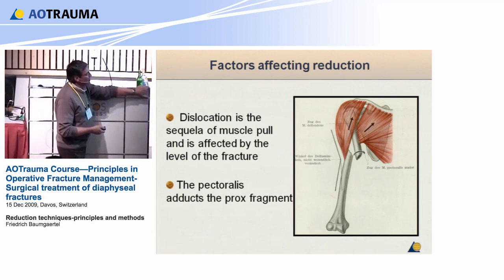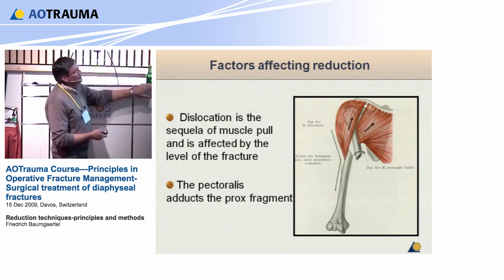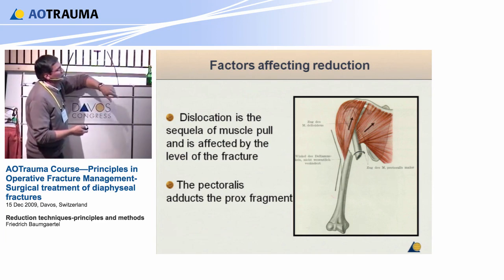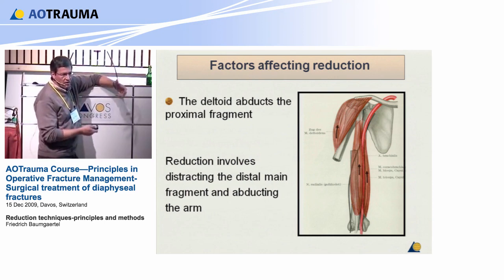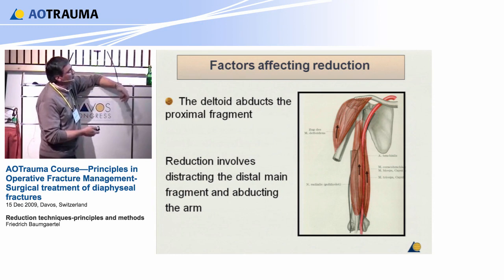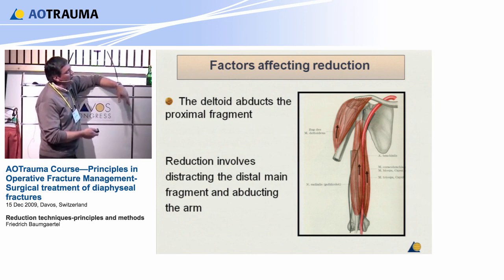The pectoralis adducts the proximal fragment. What if the fracture is more distal, and the pectoralis does not have that much power over the proximal fragment? Then the deltoid abducts the proximal fragment. So reduction involves distracting the main fragment and abducting the arm.